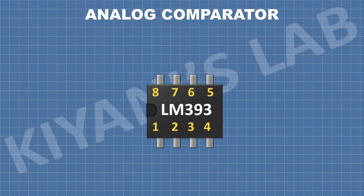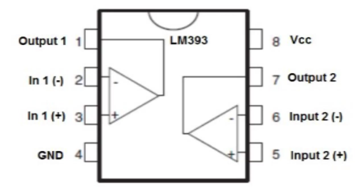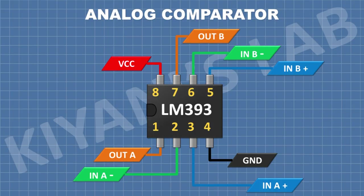The LM393 IC is an example of a voltage comparator. The LM393 IC has two analog comparators. Its pin number 8 is VCC, pin 4 is ground, pin 1 is output A, pin 2 is negative input A, pin 3 is positive input A, pin 7 is output B, pin 6 is negative input B, and pin 5 is positive input B.